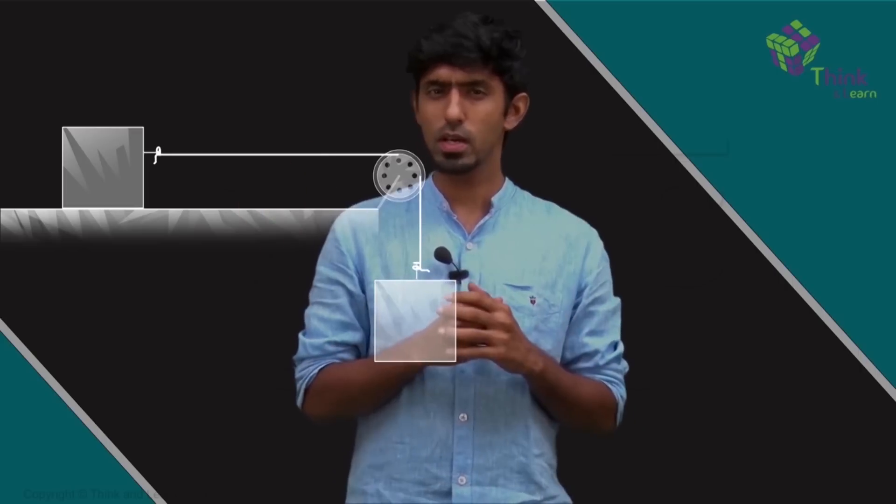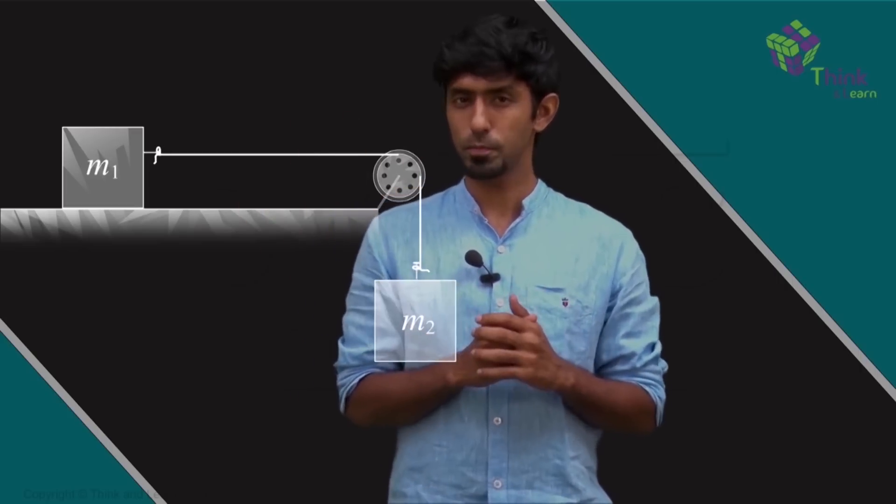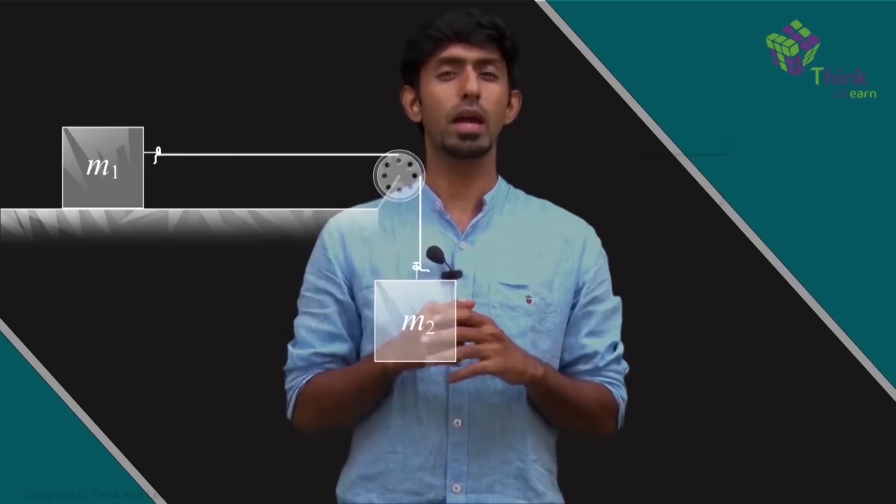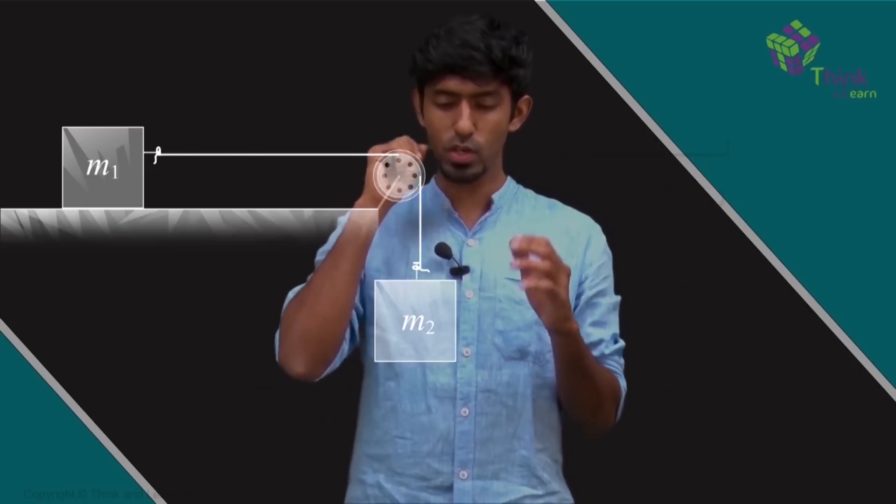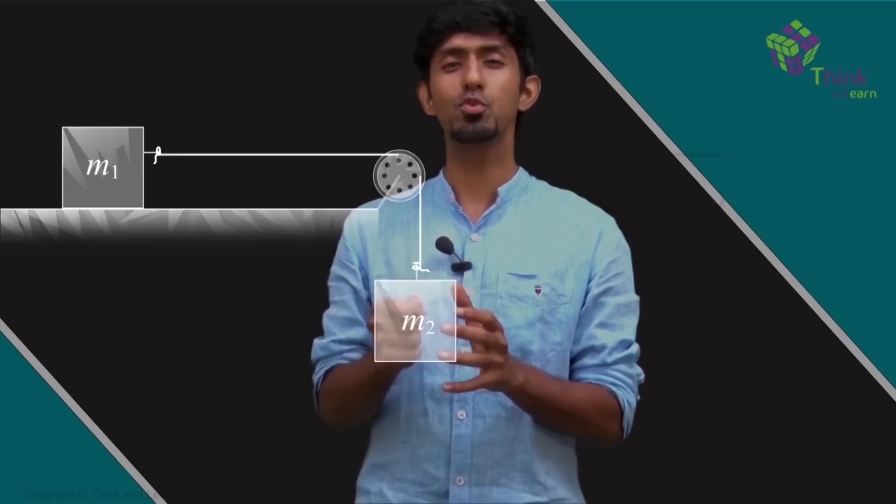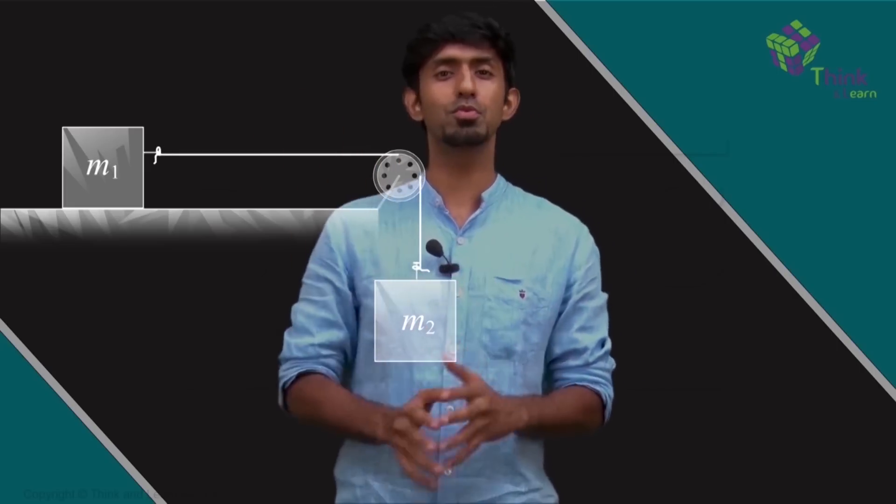Now we know we can ask many questions. Let that mass be M1, this be M2. Before we ask anything else, let's ask the question: what was the minimum mass of M2 for the system to move?